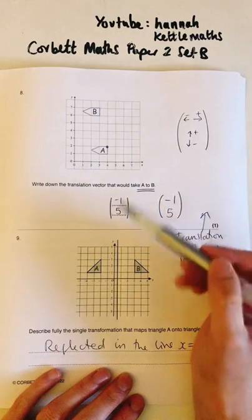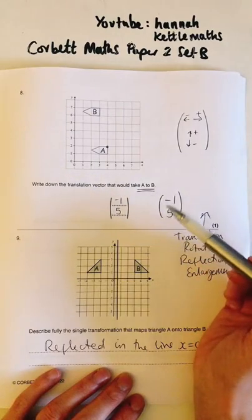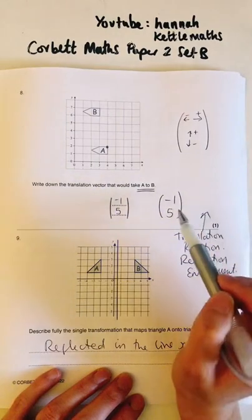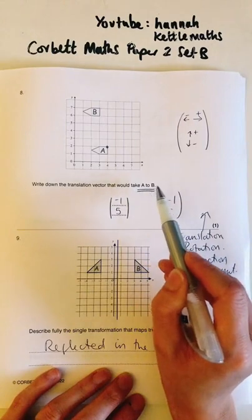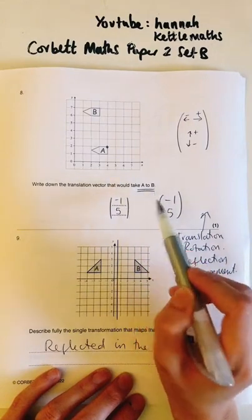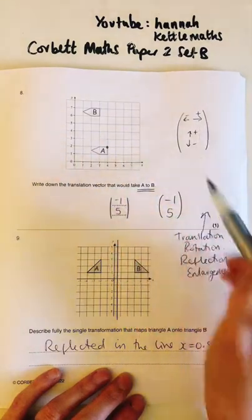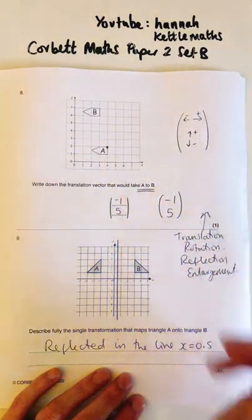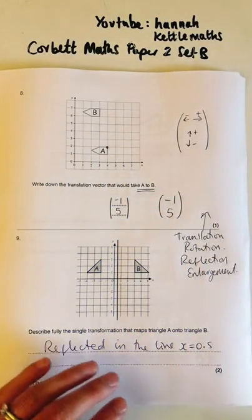Someone asked if the vector could be five, minus one — no. They told us to go from A to B, not B to A. It must be one to the left and five up, written as minus one, five. That's the only correct way.